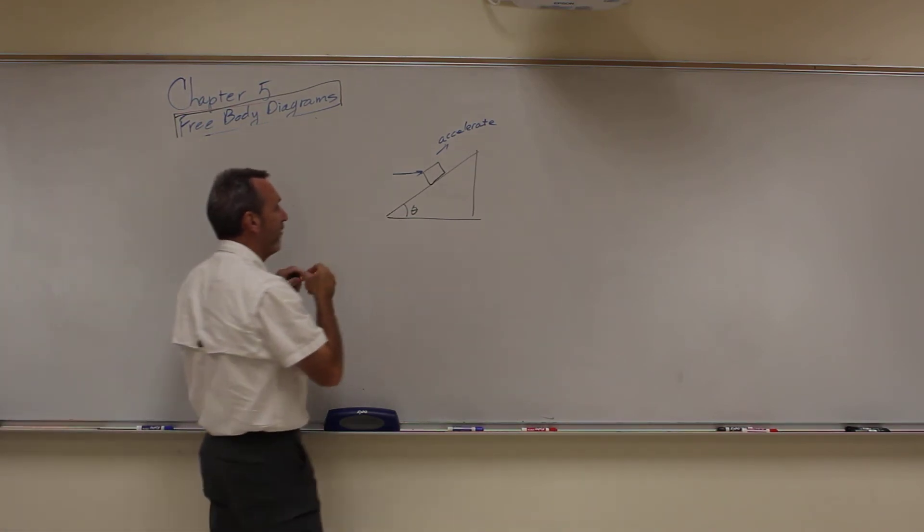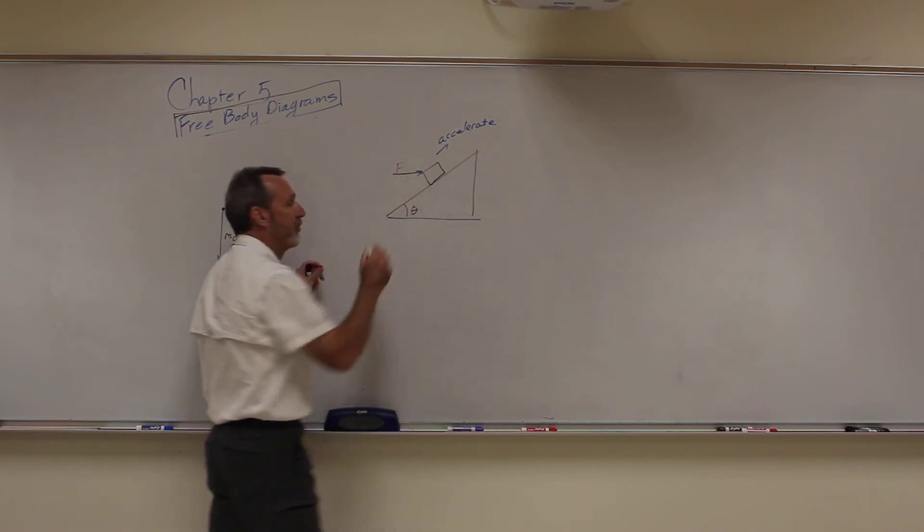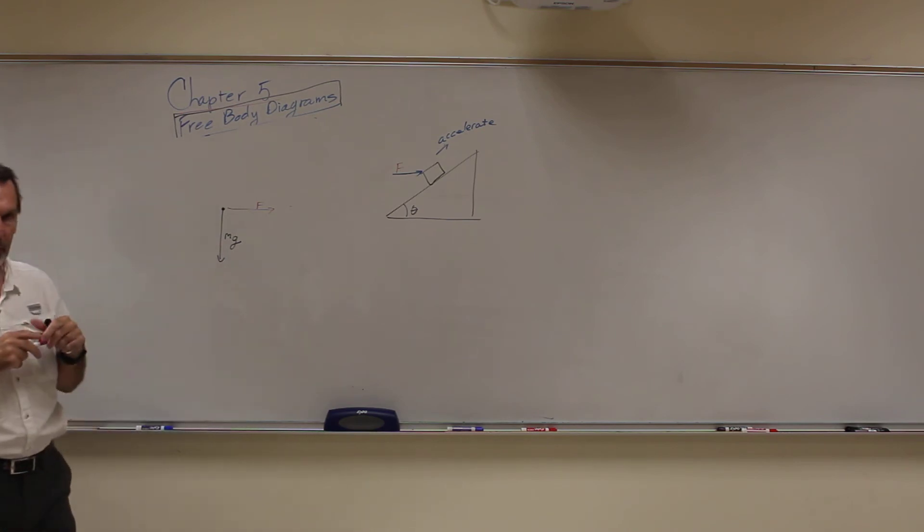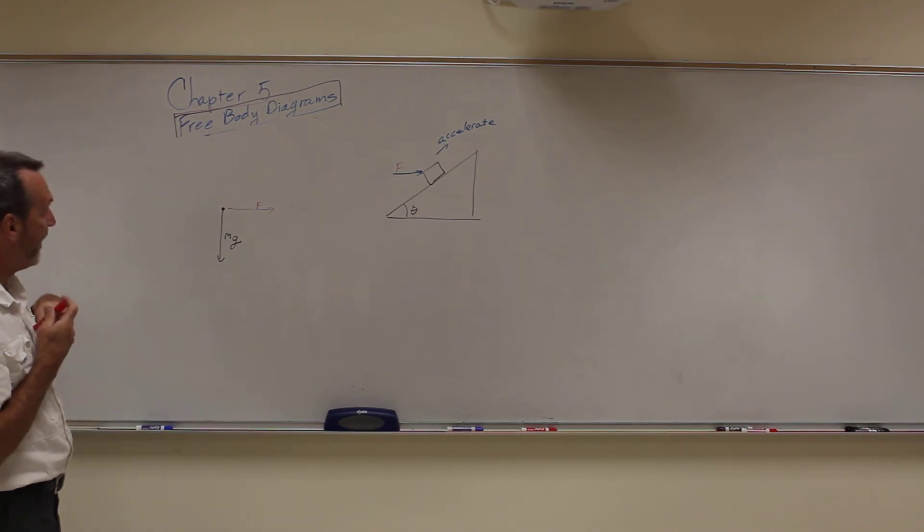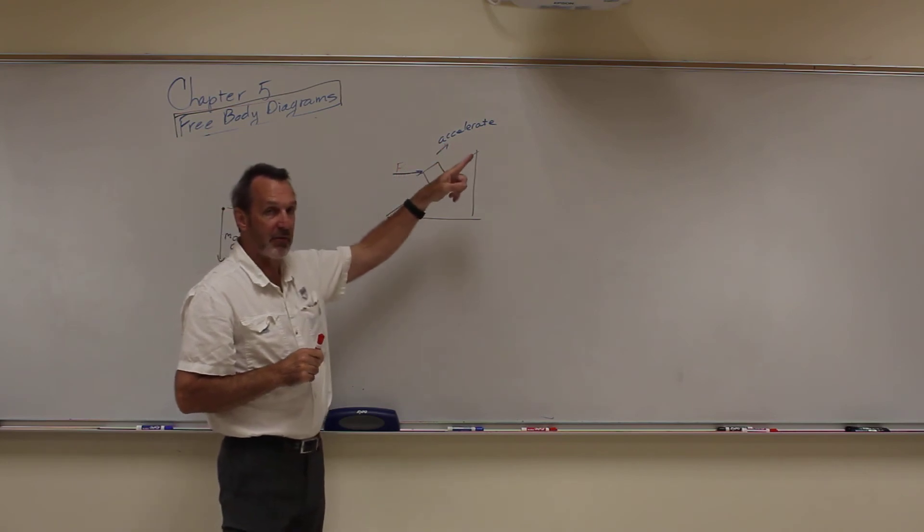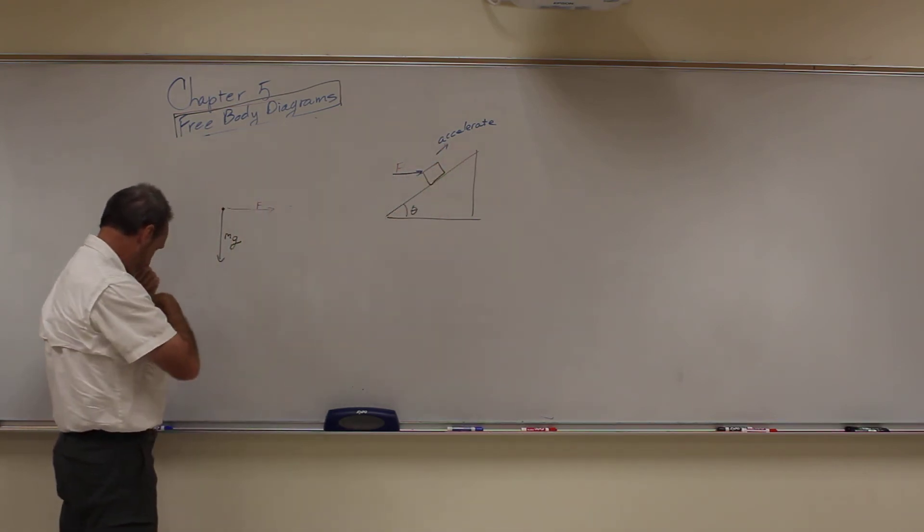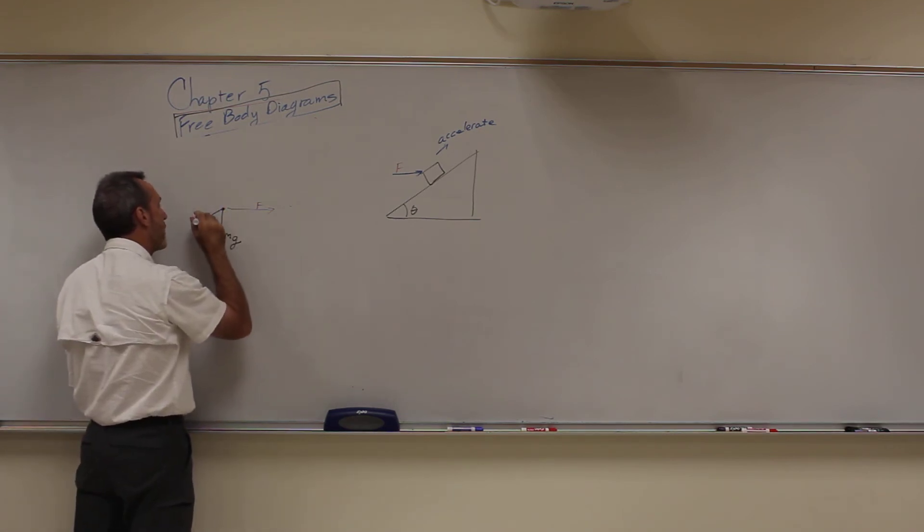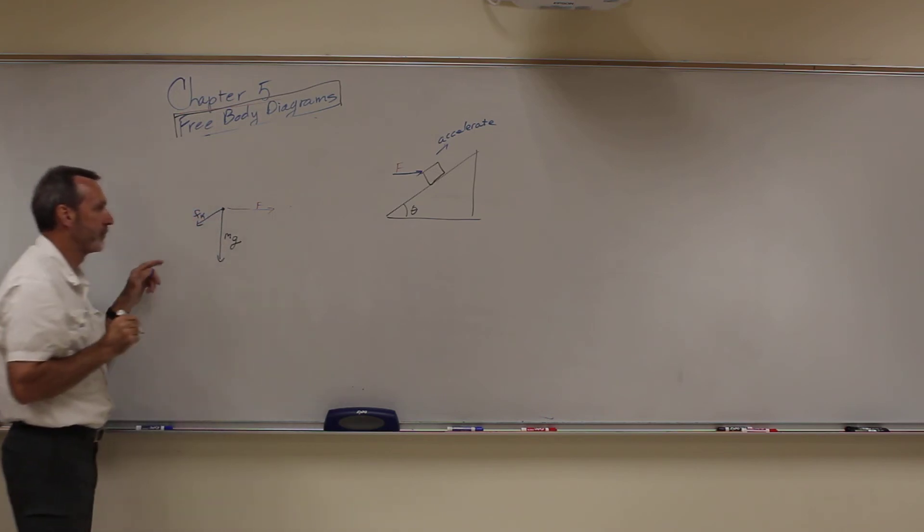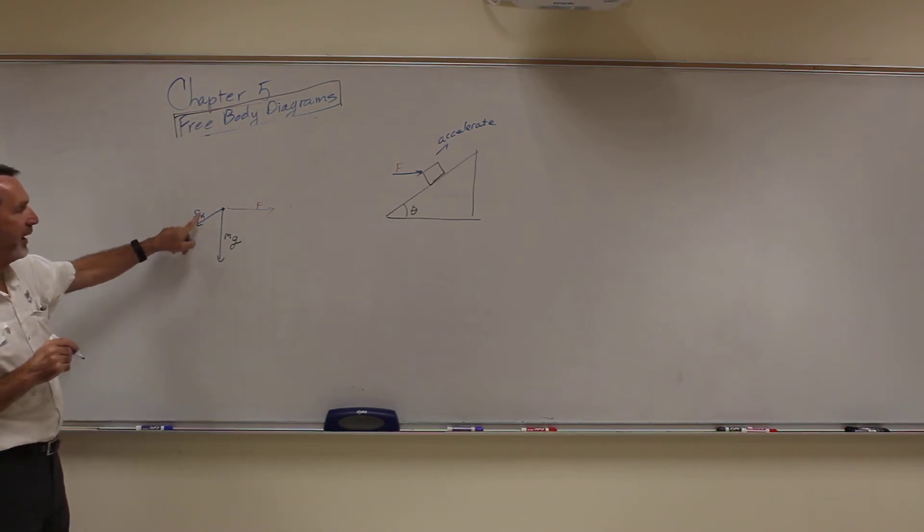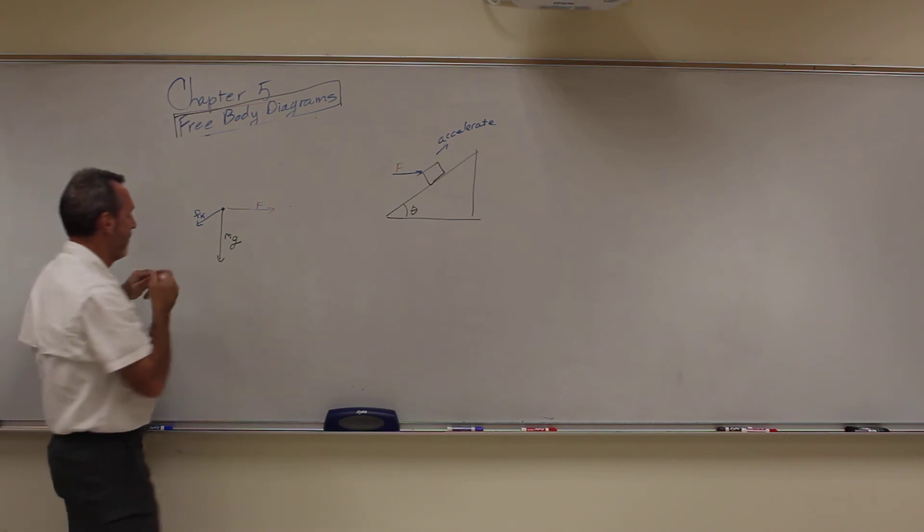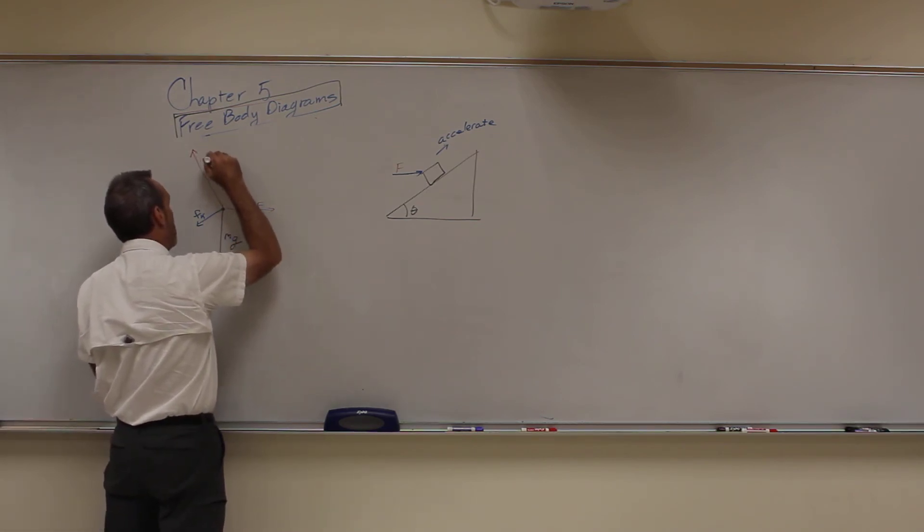And this is just an applied force here, my hand pushing on it. So I'm just going to call that F. So I have a force of F going like this. But it's accelerating up the incline, so I have to have friction, but friction has to be going down the incline. So I've got a friction force going this way, and it's kinetic friction. Since there's only one block, I don't have to put any more subscripts. Kinetic friction going this way. And then I also have a normal force going this way.